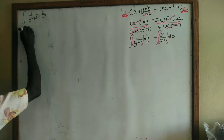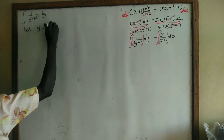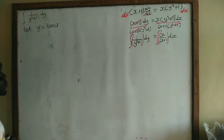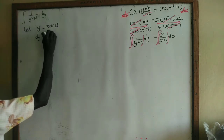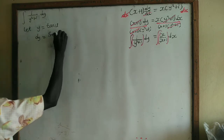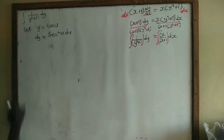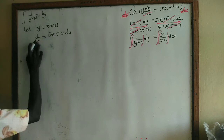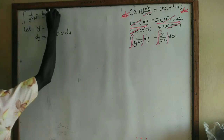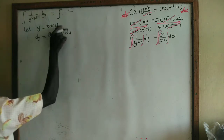We will use substitution: let y = tan(u). Now we differentiate tan(u) to get dy = sec²(u) du. We substitute y and dy into the integral, so we have the integral of 1 divided by y, which is tan(u)...